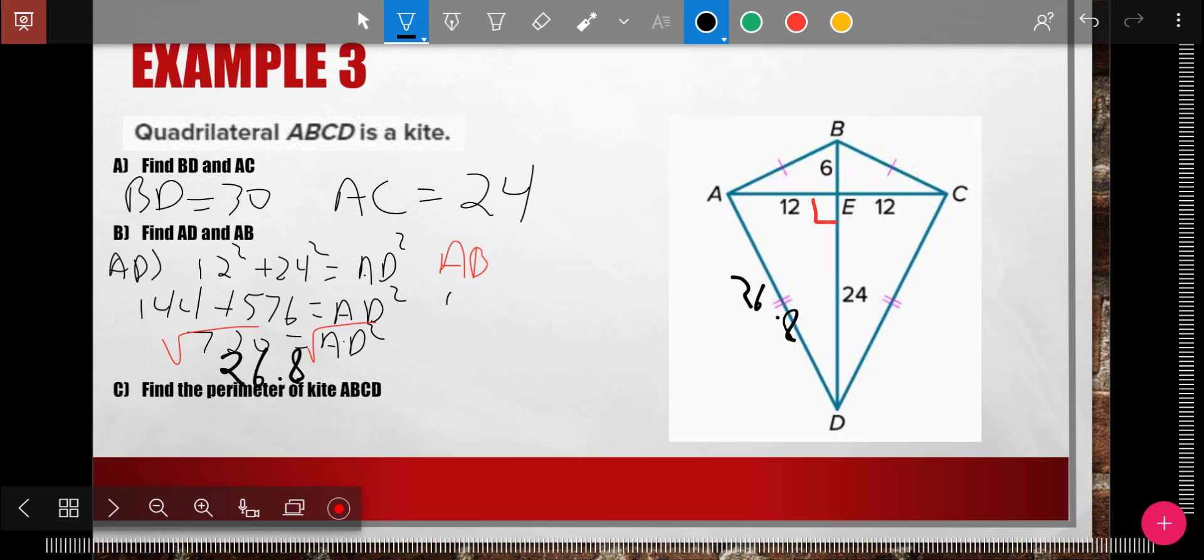And so I'm going to do 6 squared plus 12 squared equals AB squared. 6 squared is 36 plus 12 squared is 144. And so those add to 180. Again, I need the square root to get AB by itself. And my calculator, I want to do the square root of 180. It says 13.4.